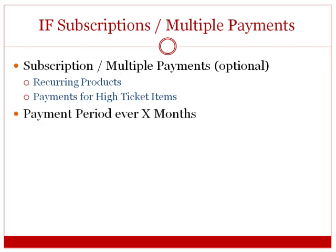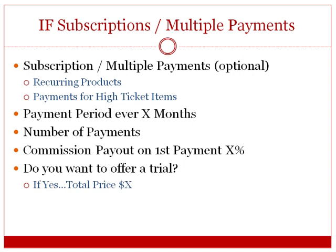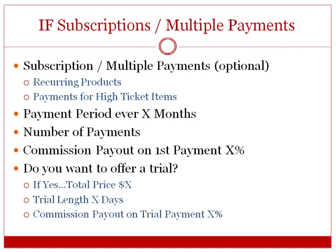You'll need to know the payment period — for how many months. For example, if your membership site is six months, specify the number of payments in those six months and how much your affiliate gets on the first payment. Then ask yourself: for your monthly, weekly, or quarterly recurring subscription, do you want to offer a trial? If you offer a seven-day trial at a dollar, the total trial price would be one dollar, and you can set the commission payout percentage on that trial payment.